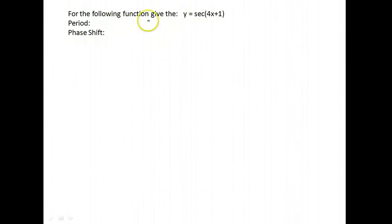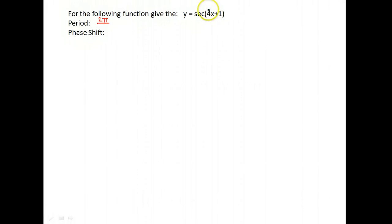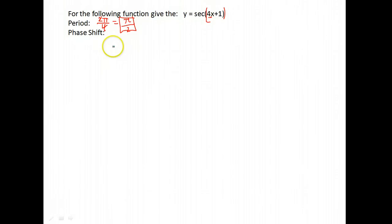Here we have secant. We want the period and phase shift. Secant has a period of 2π, so divide 2π by the number in front of x, which is 4. Reducing that fraction: 2π over 4 simplifies to π over 2. For the phase shift, the number added to x was 1; write it with the opposite sign as negative 1, then divide by 4. The phase shift is negative one-fourth.